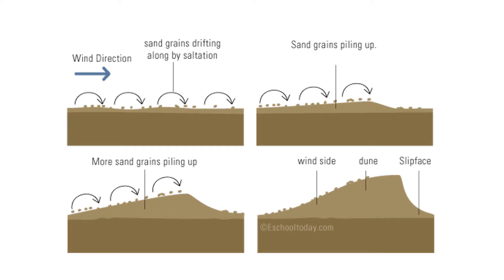Let's focus on sand dunes for a moment. Wind blows the grains along the surface. Due to the shapes of the grains and all of their irregularities, sooner or later they will start to clump together and pile up. The pile grows over time as more grains are added. But sooner or later, the pile grows too big. Gravity causes the grains at the top of the slope to slide down the slip face, creating the classic dune structure.